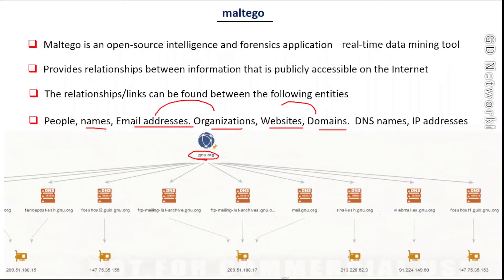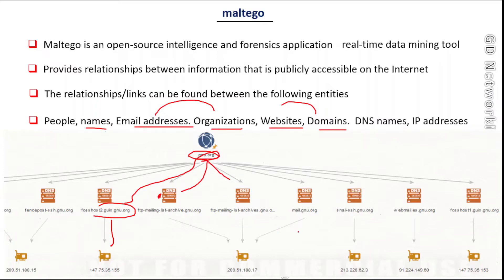As an example, we have taken the domain name gnu.org here. These are some subdomains related to it, and with those subdomains we have IP addresses. So the IP addresses are related to the subdomains, and the subdomains are related to the domain. This is how the relationship graph is created for us.